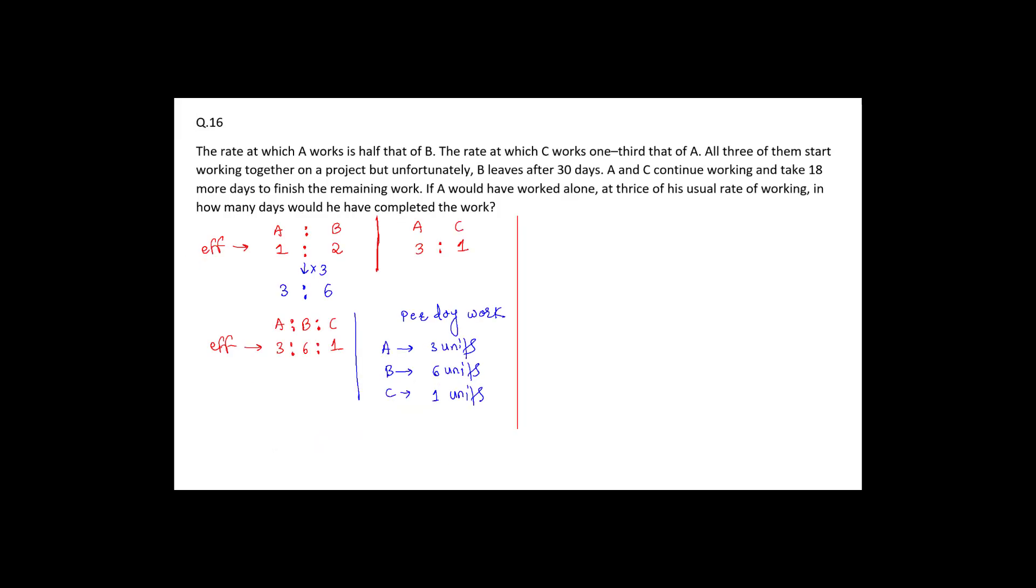So A, B, and C, they work together for 30 days. And after that B leaves. So A and C continue the work and they complete the remaining work in 18 days.